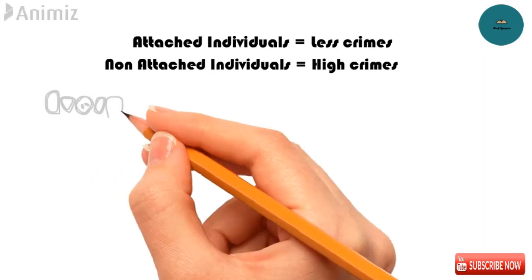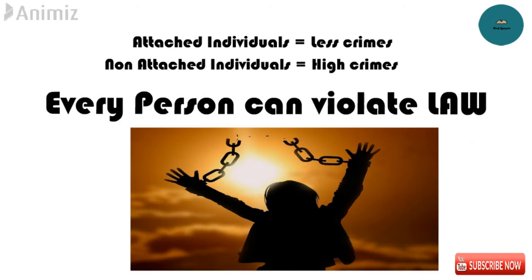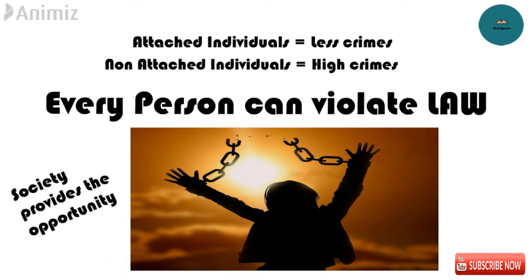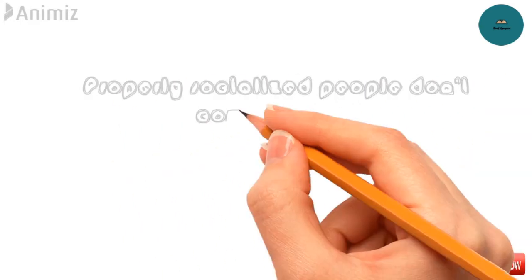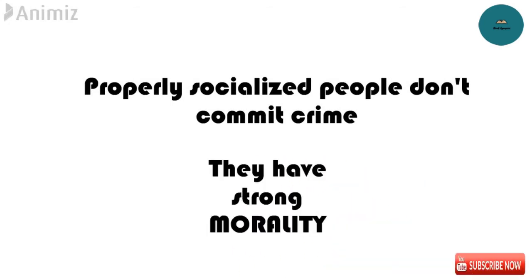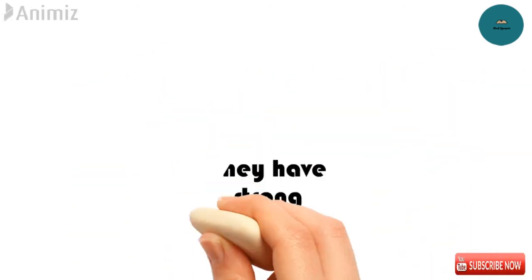Social control theory states that every person has the potential to violate the law, because criminal activities give immediate reward and gratification to a criminal, and that society provides opportunity to everyone to violate the law. People who don't commit crime have been properly socialized and have developed a strong moral sense which makes them incapable of hurting others.